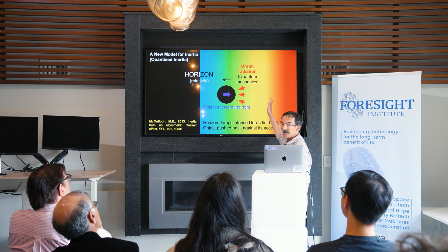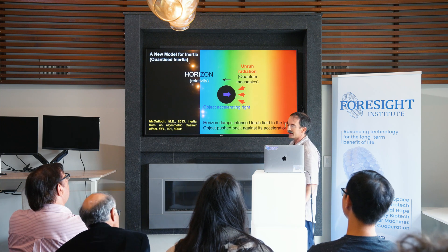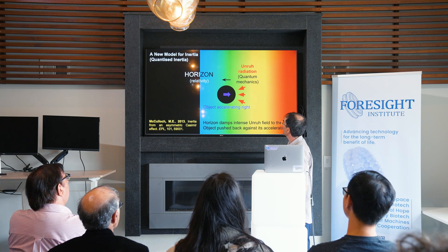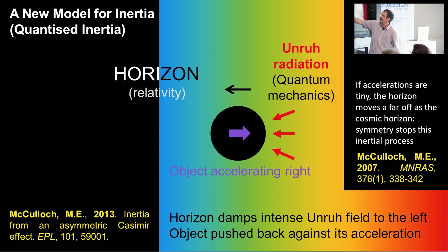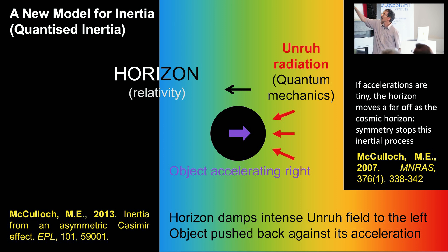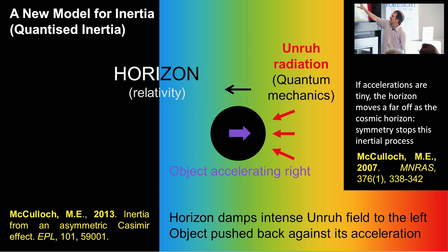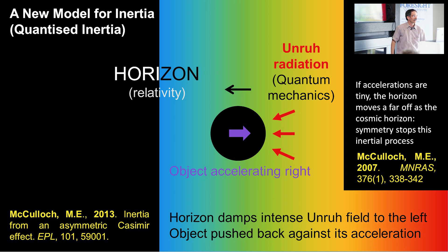If you imagine an object accelerating to the right — this black ball here — quantum mechanics and a bit of relativity says that it will see Unruh radiation, which I've tried to show in red. Unruh radiation has now been seen at CERN by Lynch et al. Relativity also says that on the side away from which the object is accelerating, there will be a horizon, because information from that area can never catch up to the object. This horizon damps the Unruh radiation — combining relativity and quantum mechanics. So there's more radiation on one side, less on the other, pushing the object back against its acceleration.